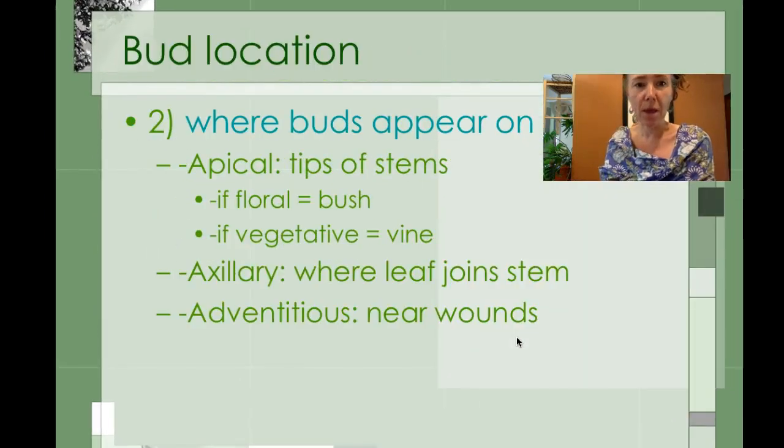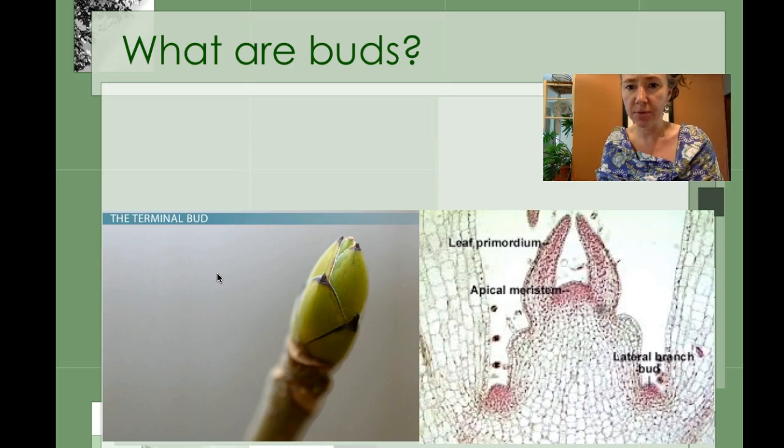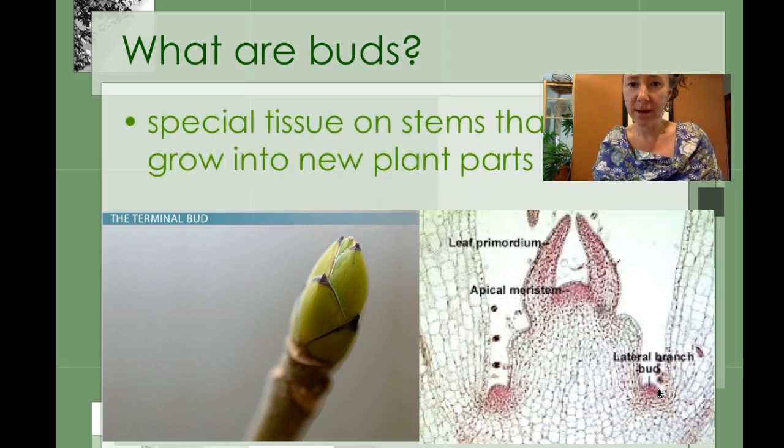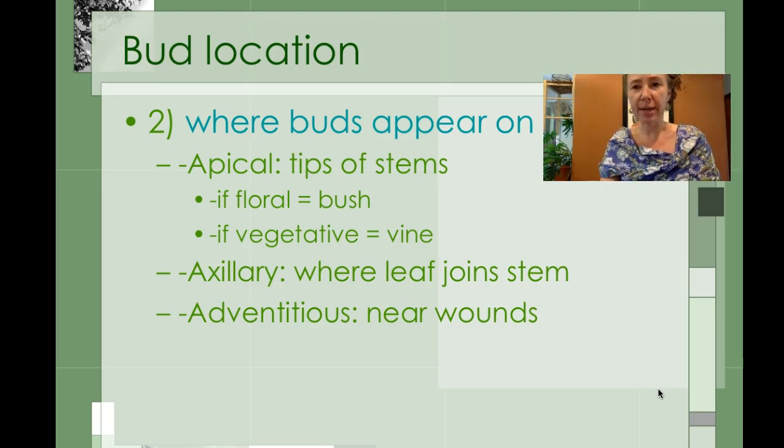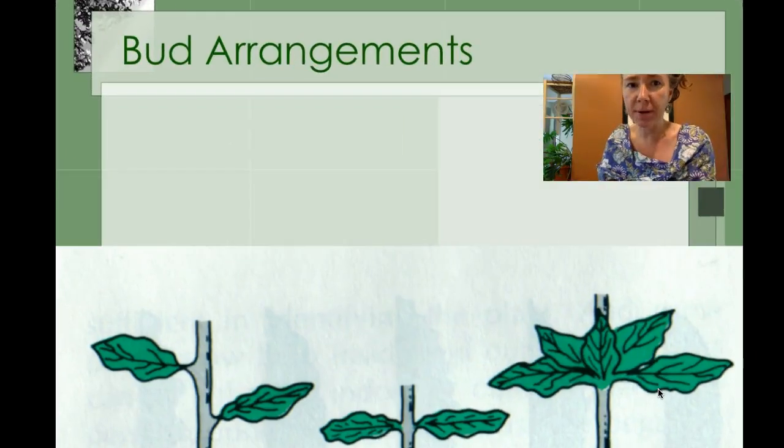Buds typically appear as apical buds or terminal buds based on where they are, so at the tips of a stem, or auxiliary if it's in between, kind of in the armpits of the stem, or lateral buds we sometimes call that, or adventitious. For example, when we talk about plant propagation and layering like air layering, if a plant is wounded, then buds can occur in a place where normally they wouldn't based on the pattern of the tree.